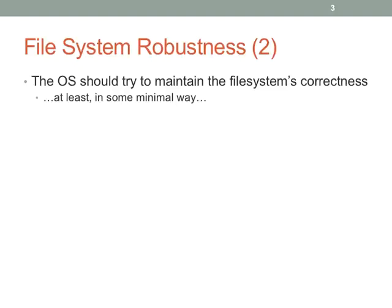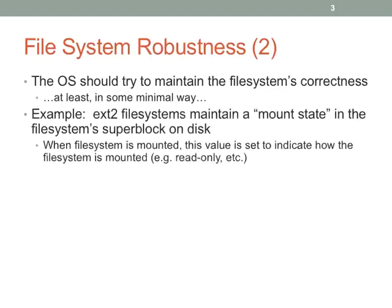The OS is responsible for making sure the file system stays correct, at least in some minimal way. We want to make sure we're not leaking data, that we don't have directory entries pointing nowhere, or files that get lost from directories. We need to make sure the file system stays complete so we can actually access everything.